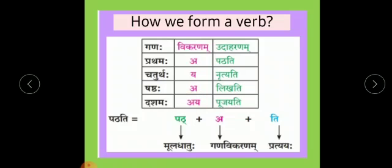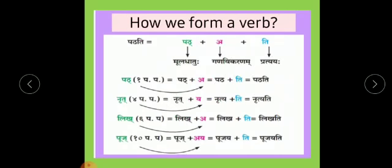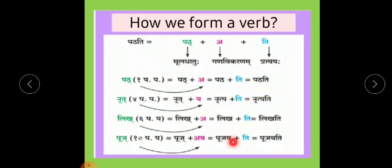There are many examples across Prathamagana, Chaturthaganam, and Shashthaganam. By using these Vikaranam signs, we form different verbs: Patha + A + Ti = Pathati; Nrut + Y + Ti = Nrutyati; Likha + A + Ti = Likhati; Pooja + AY + Ti (Prathamapurusha ending) = Poojayati. This is how we form a verb using Mooladhatu plus Gana Vikaranam plus Pratyaya.